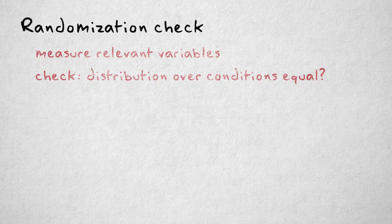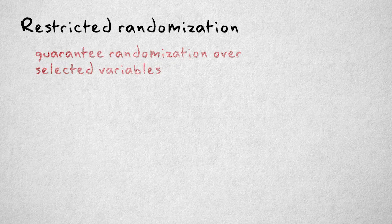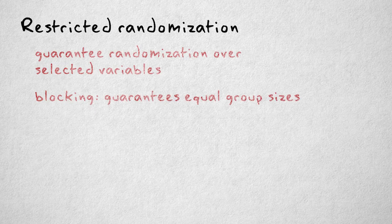There is a way to guarantee randomization works on a select set of variables using restricted randomization procedures. Blocking is the simplest form of restricted randomization. It ensures equal or almost equal group sizes.